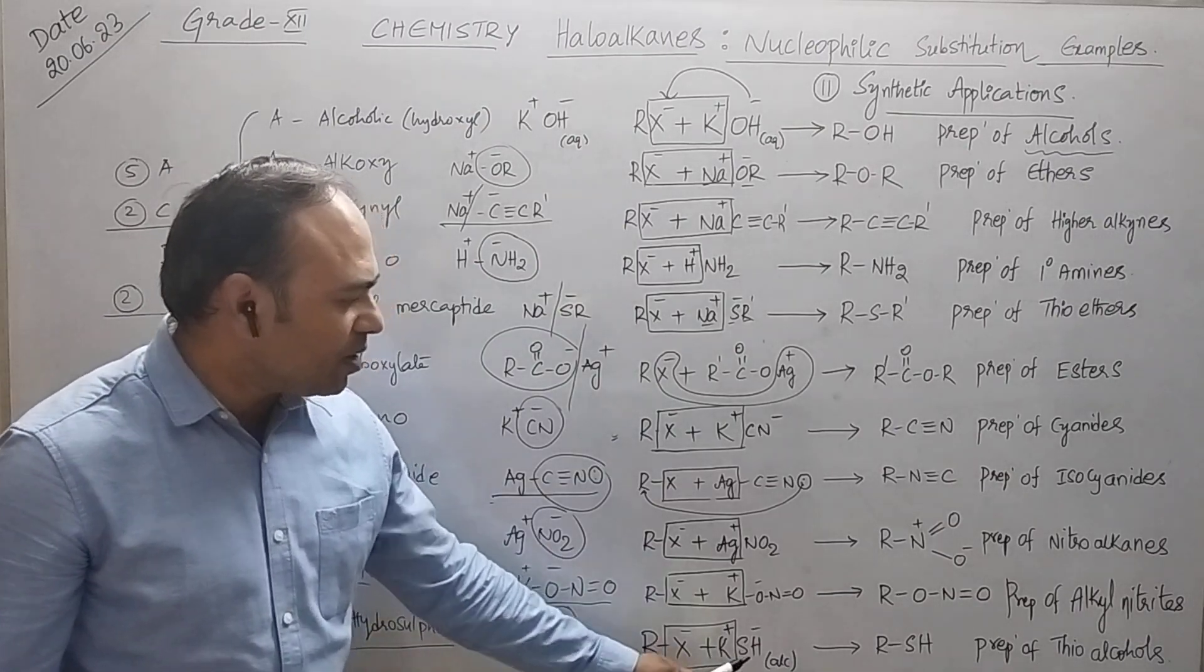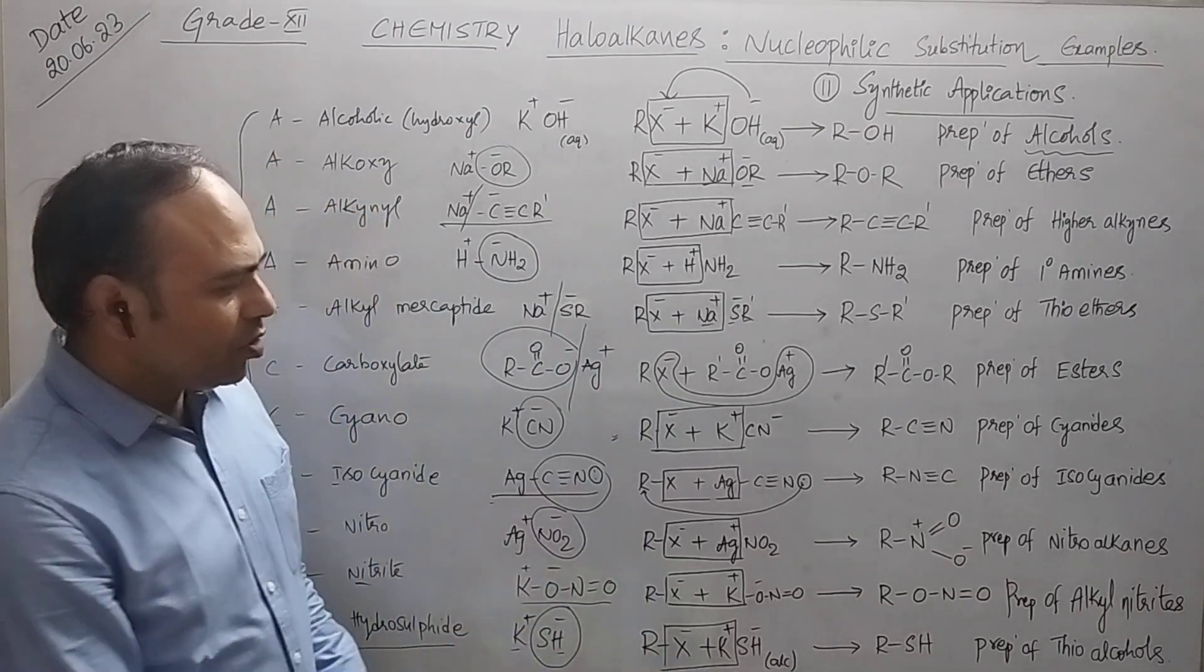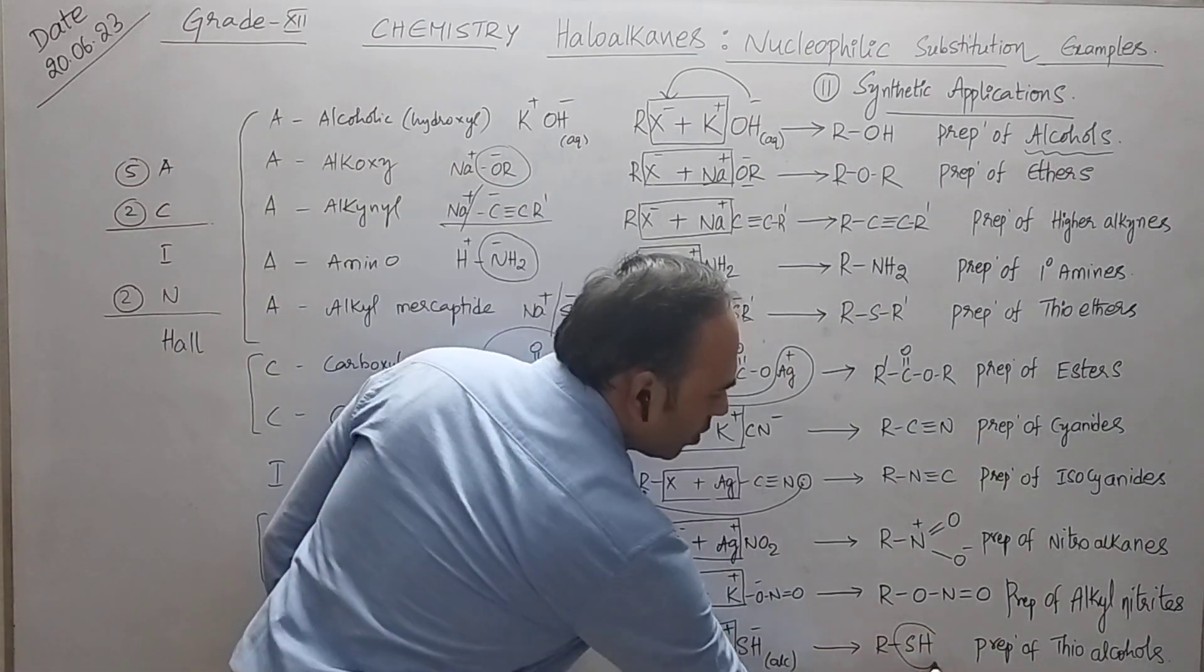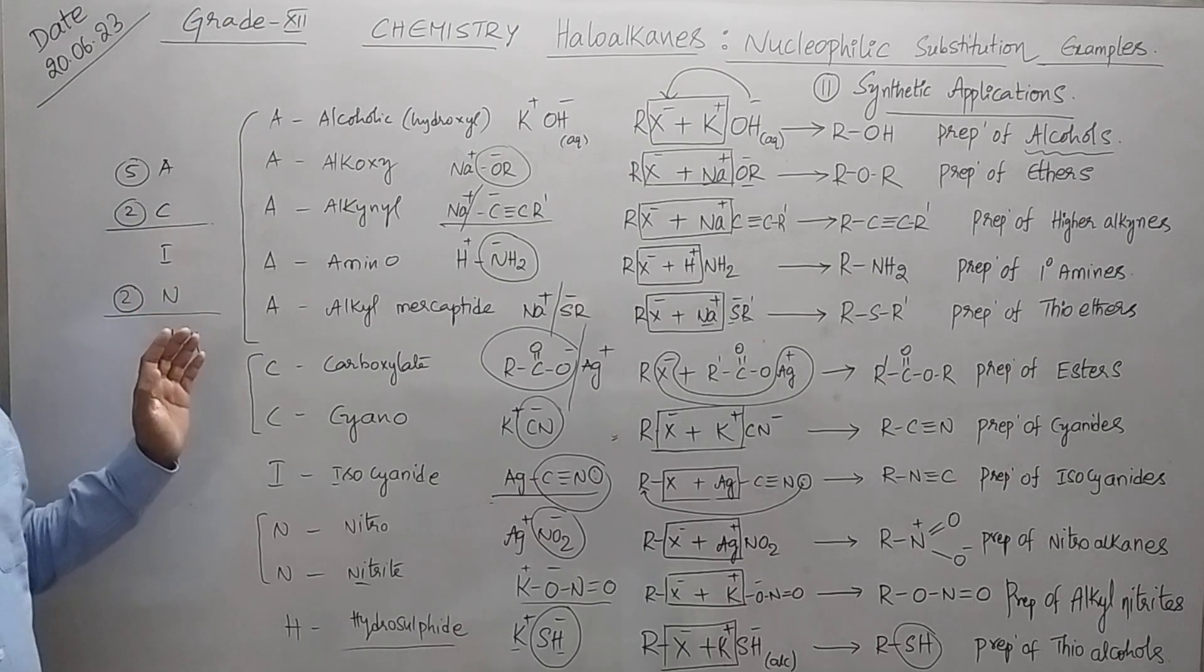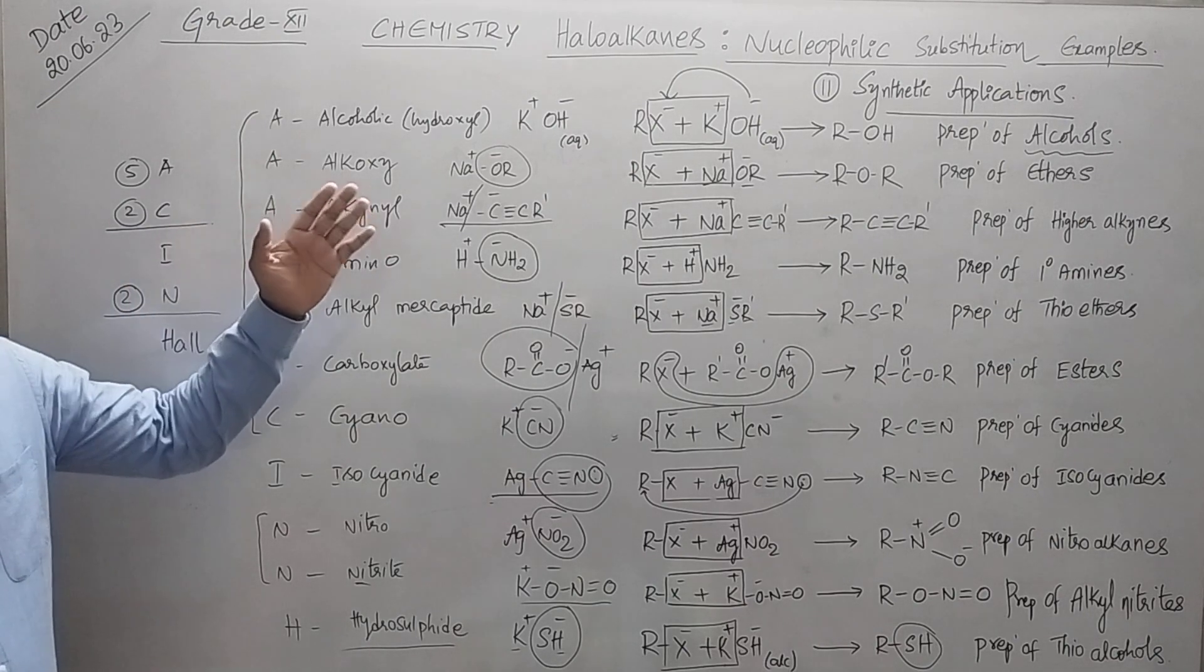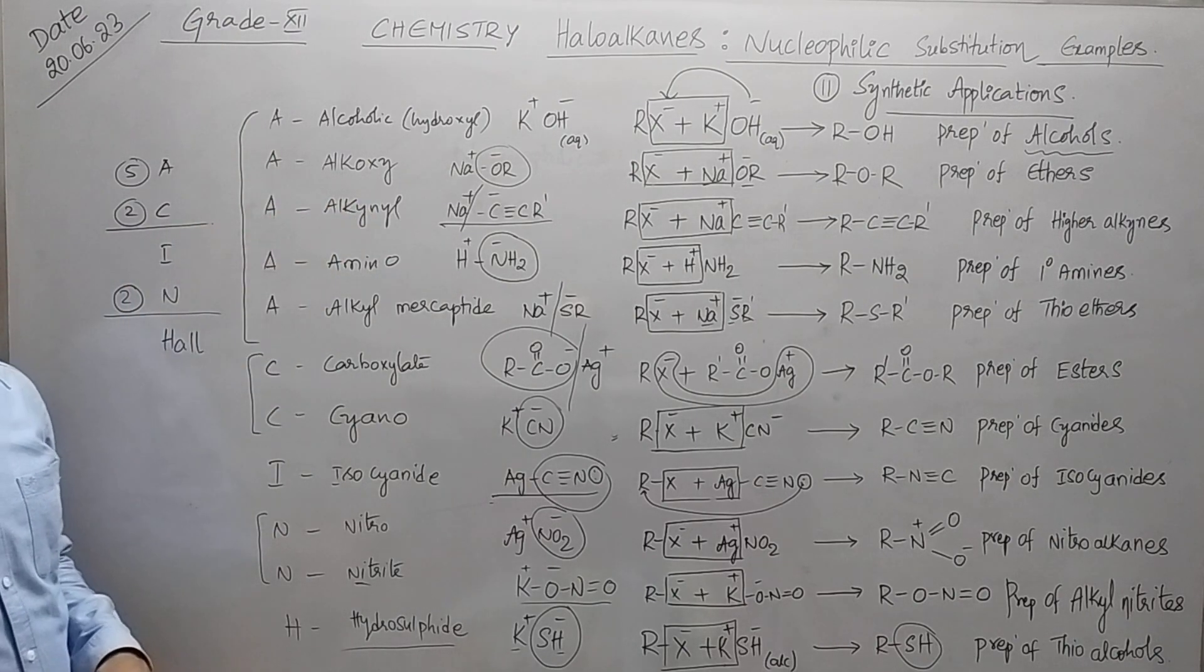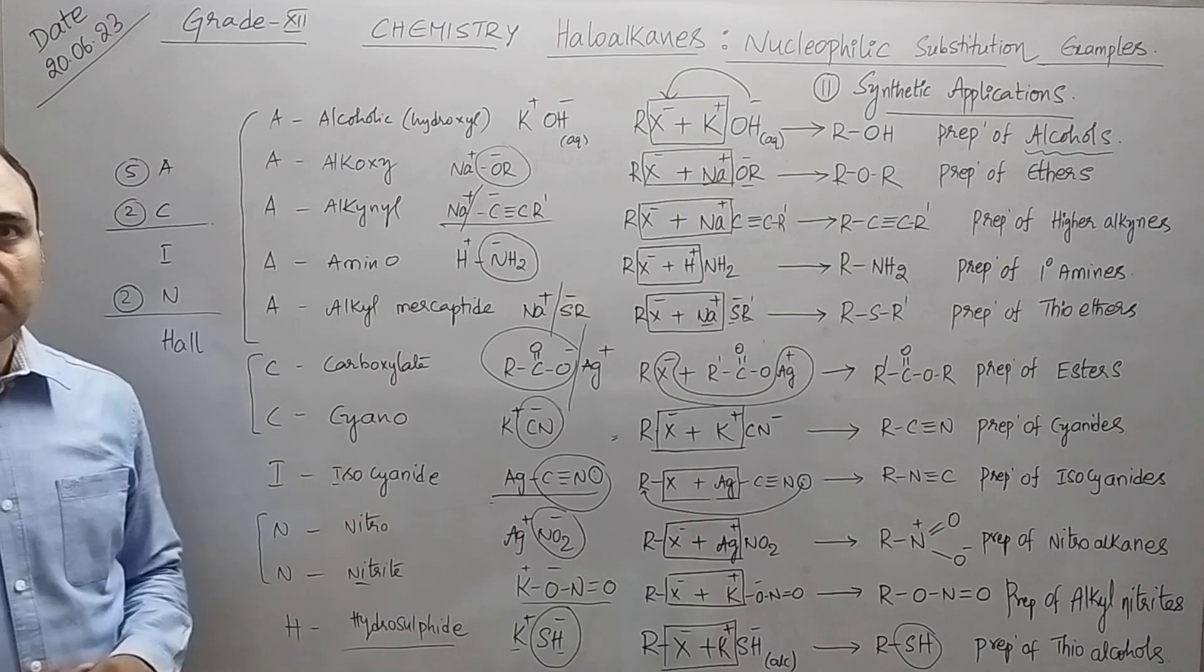Now the last one, haloalkane plus potassium bisulfide in alcohol, you will get thioalcohol, nothing but SH. So this is the simplest method so that you can remember all the level nucleophilic substitution of haloalkane. Hope you have understood this. Thank you so much.